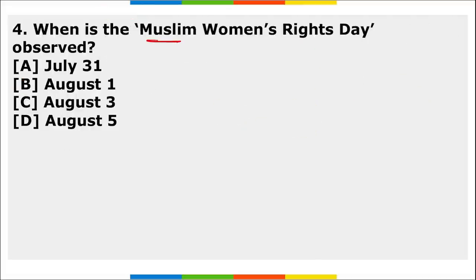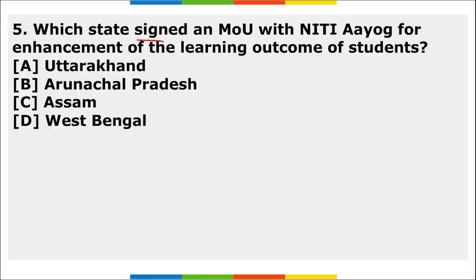Muslim Women's Rights Day is observed on 1st August every year to celebrate the enforcement of the law against Triple Talaq, also known as Talaq-e-Bidat. This day is observed annually on 1st August.